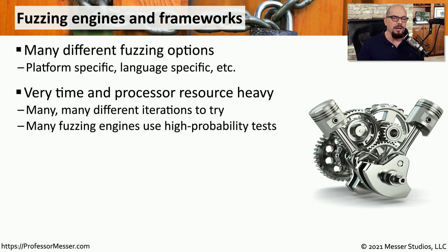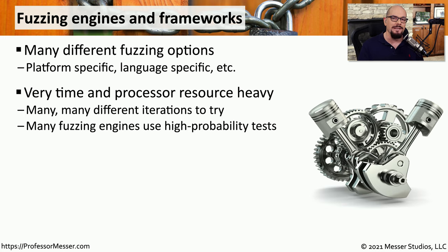These fuzzing tests take a lot of time and a lot of processing power. They're almost always automated, so there are constant randomized inputs being tried against the application. This may take quite a bit of time because the fuzzing engine is going to try many different iterations to locate where a vulnerability might be. Many fuzzing utilities are also optimized to try the most likely tests, which speeds things up instead of going through every possible random input.